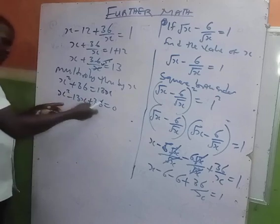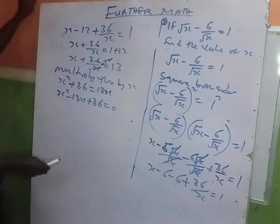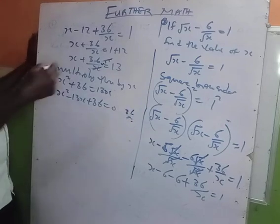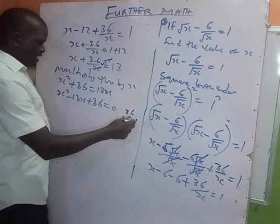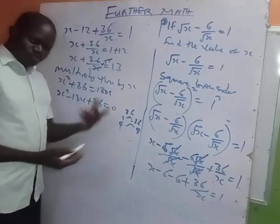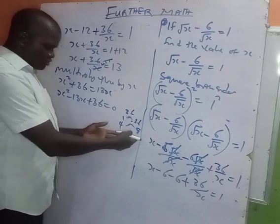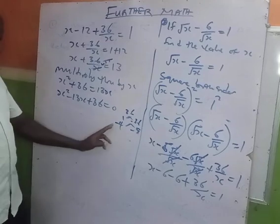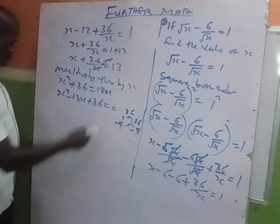To factorize this, find factors of 36. Among the factor pairs, we use 4 and 9. We need two numbers that add to -13 and multiply to +36, so they are -4 and -9. Check: -4 + (-9) = -13 and (-4)×(-9) = 36.